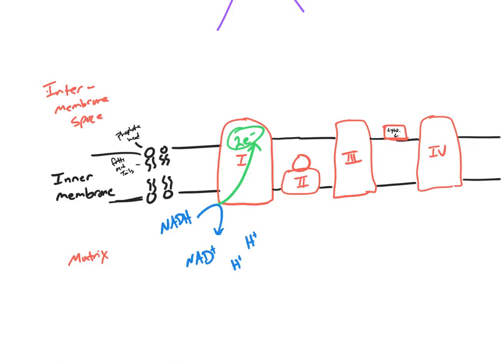These electrons are going to move through the other proteins. As they move through protein number one, it causes a hydrogen ion to move across the membrane. So it moves from the matrix into the intermembrane space, accumulating hydrogen ions in the intermembrane space.